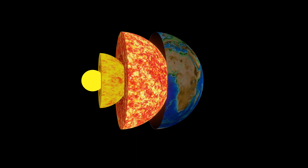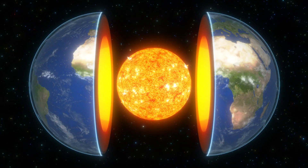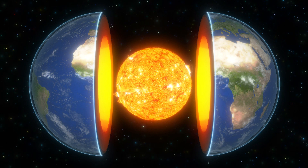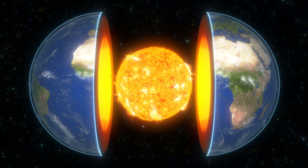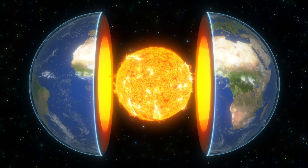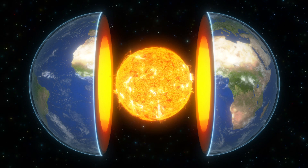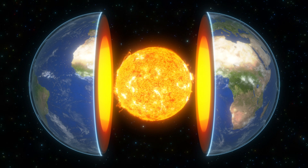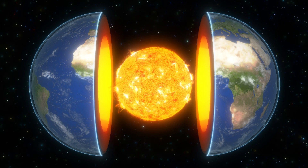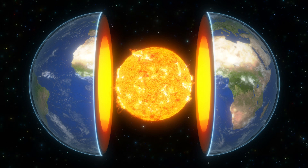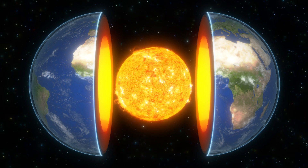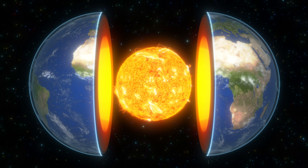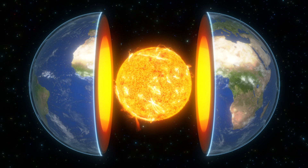This liquid layer acts as a dynamo, generating the Earth's magnetic field. This field acts like a shield, protecting us by deflecting harmful radiation and cosmic rays from the Sun. This is essentially the role of the core.